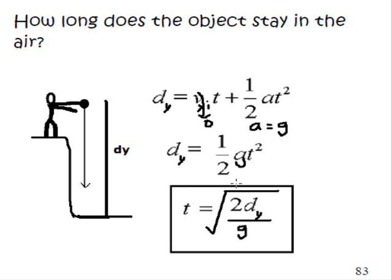So if we do some substituting here and some rearranging, we can figure out how long an object stays in the air by using the equation square root of 2 times dy divided by gravity.